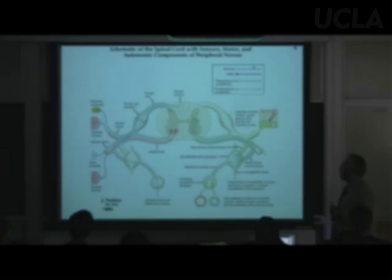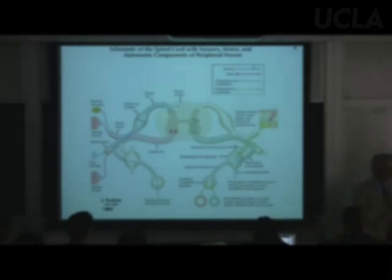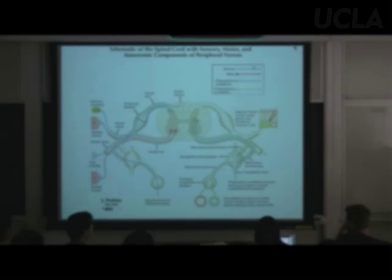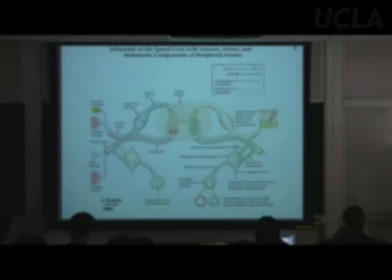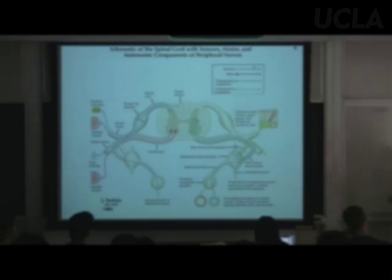There was an English guy named Bell who noticed the two roots and decided to do an experiment. When he cut the ventral root of cats, they moved — cutting a nerve sets off action potentials. When he cut the dorsal root, the cat didn't react. So Bell concluded: ventral root is motor, dorsal root is somatosensory.